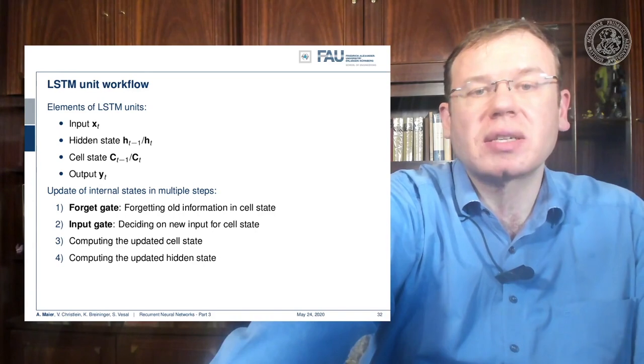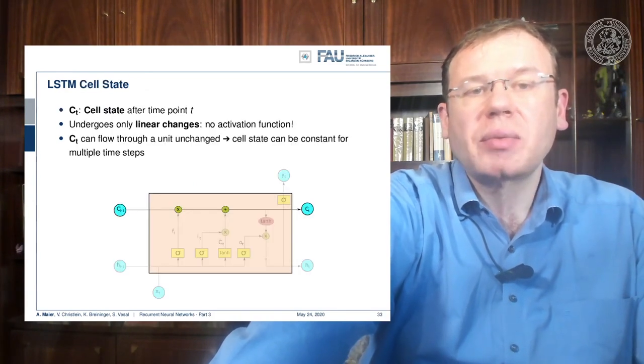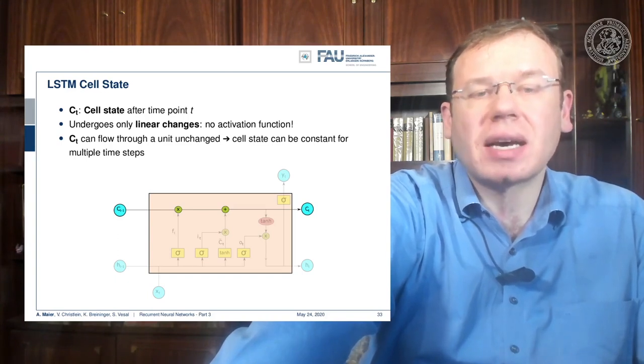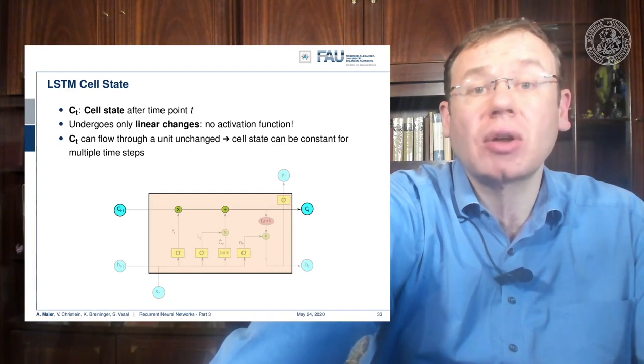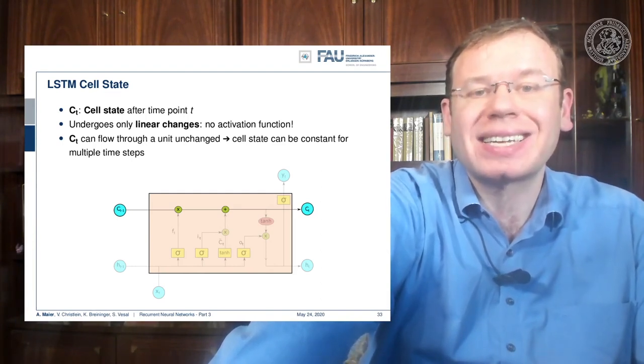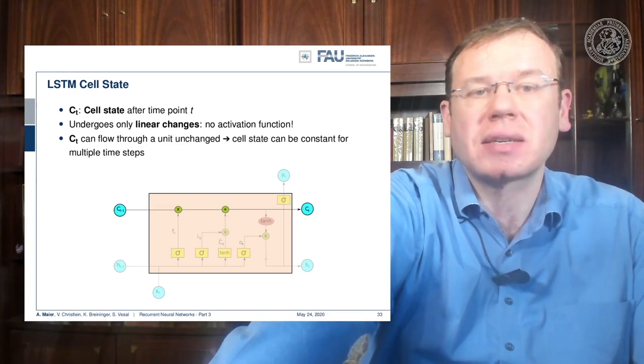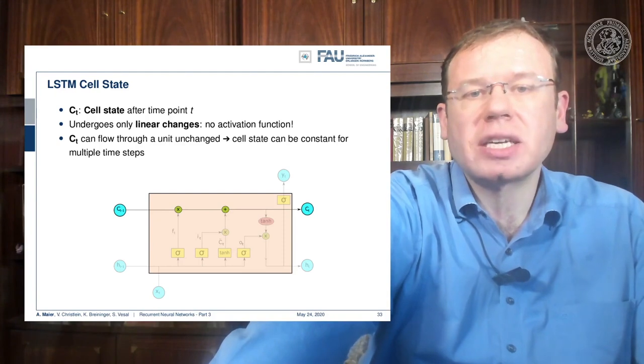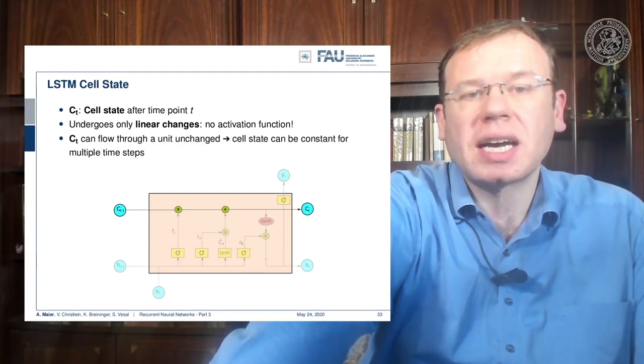So let's look into the workflow. We have the cell state after each time point T, and the cell state undergoes only linear changes, so there's no activation function. You see there's only a multiplication and an addition on the path of the cell state. The cell state can flow through the unit unchanged and can be constant for multiple time steps.